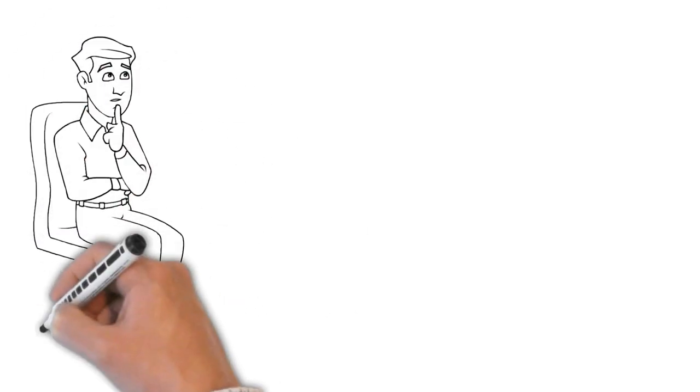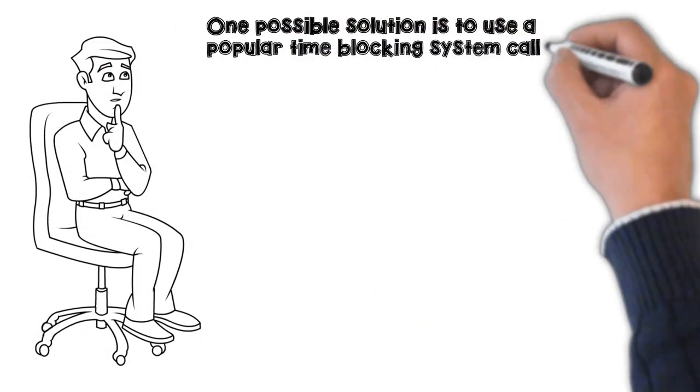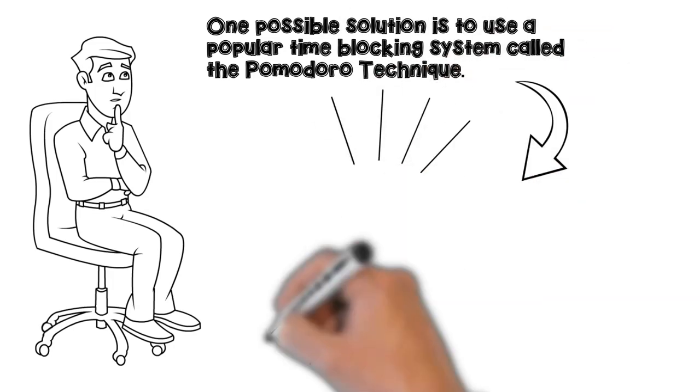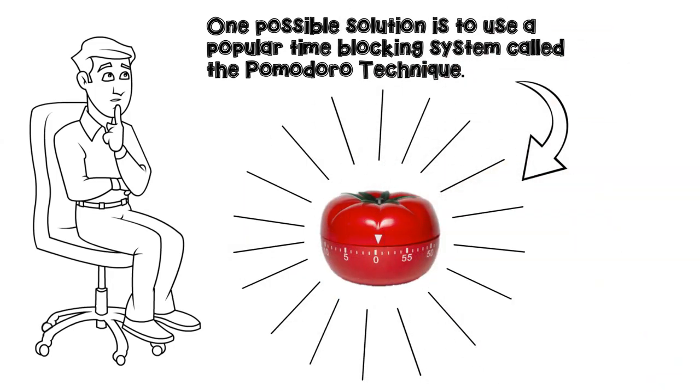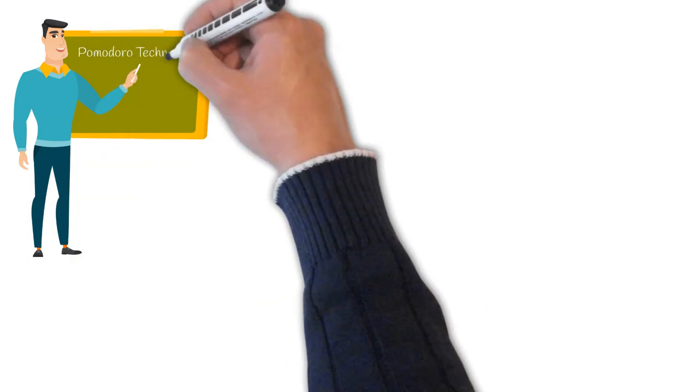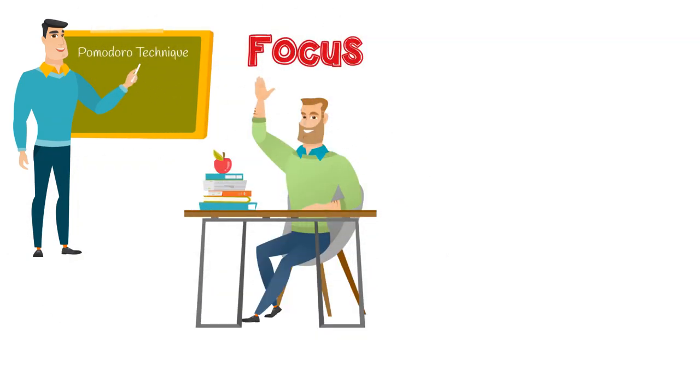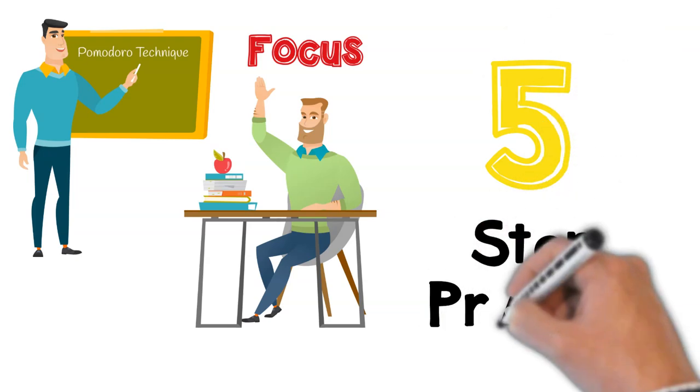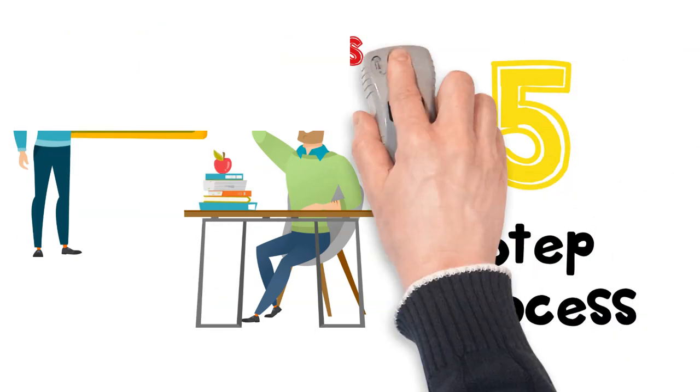So how do you get everything finished efficiently? One possible solution is to use a popular timing block system called the Pomodoro Technique. In this video, we'll explore the Pomodoro Technique and help you become hyper-focused on important tasks, and then I will provide a simple 5-step process for implementing this concept.